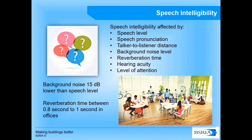Speech intelligibility is how easy it is to understand someone talking to you. It is affected by speech level, pronunciation, distance between people, background noise levels, reverberation time, hearing acuity, and level of attention. A basic rule is that background noise should be at least 15 decibels lower than the speech level. Reverberation time should be between 0.8 and 1 second in office spaces to aid speech intelligibility — too echoey and you struggle to understand speech, but too little reverberation can also stop sound from propagating.